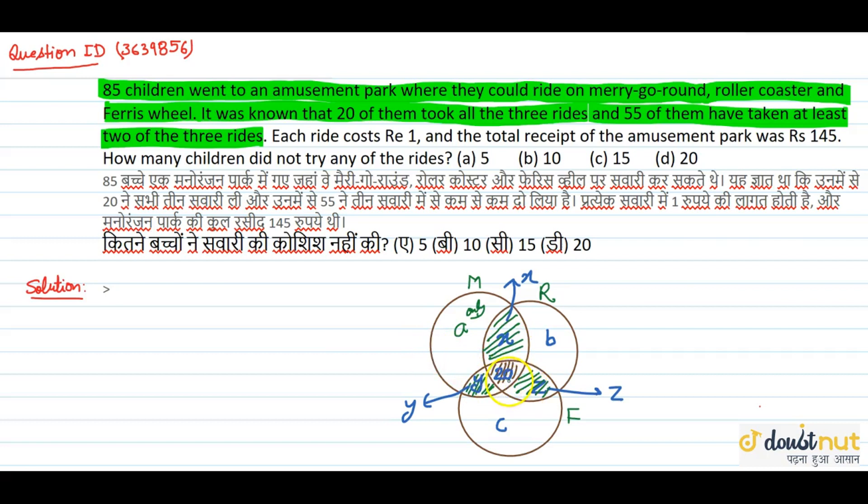First condition is those who have at least 2 rides and those who have 3 rides, how many children? 55 children. So here, x plus y plus z plus 20 equals 55. So x plus y plus z equals 35.